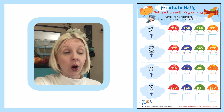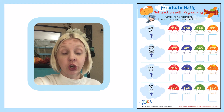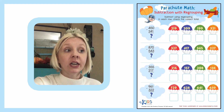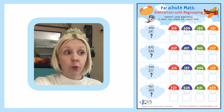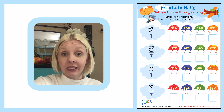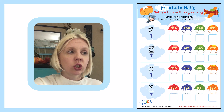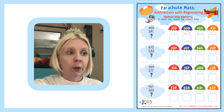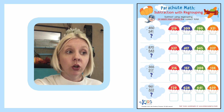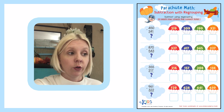Alright, so our worksheet today is called Parachute Math Subtraction with Regrouping. Regrouping means that we're going to need to borrow some numbers. The directions say: subtract using regrouping in each row, check the correct total.